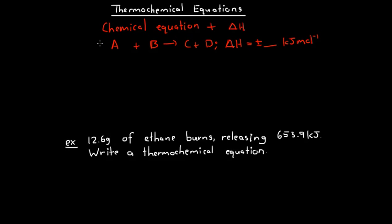For example, if the reaction has coefficients like this — if we have x kilojoules per mole — that means that if we react 2 moles of A with 3 moles of B, then we will produce x kilojoules of energy. So the kilojoules per mole doesn't mean kilojoules per mole of reactant A. It means kilojoules per mole in the sense that if every coefficient represented the number of moles of each substance, then we would release this number of kilojoules.